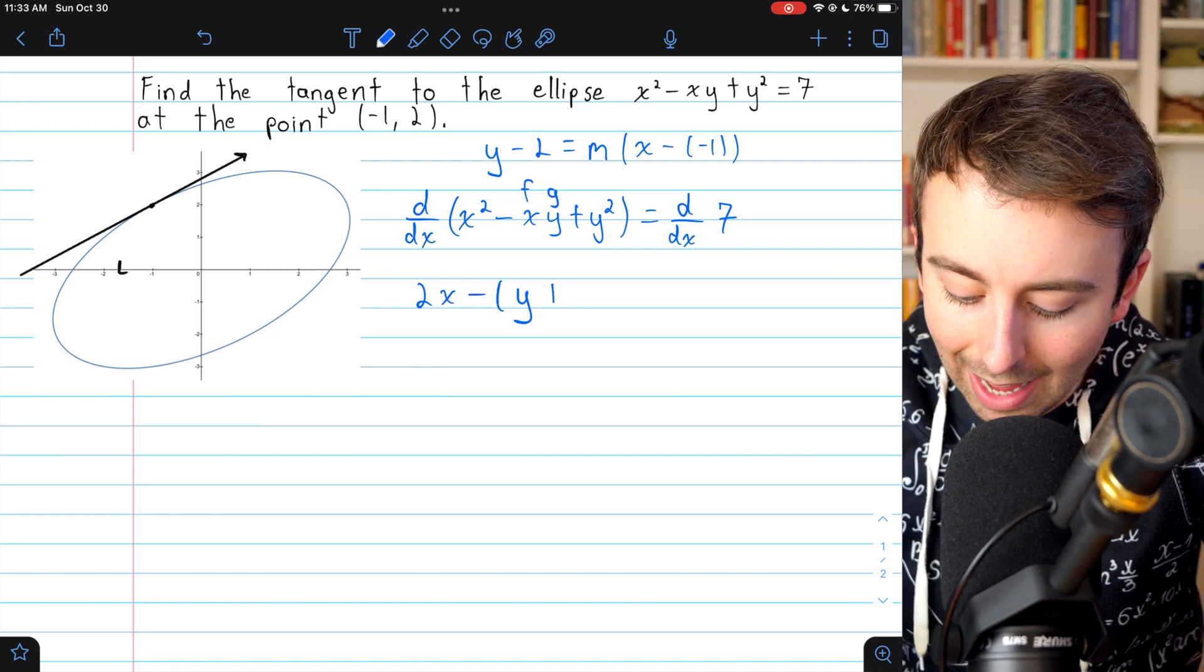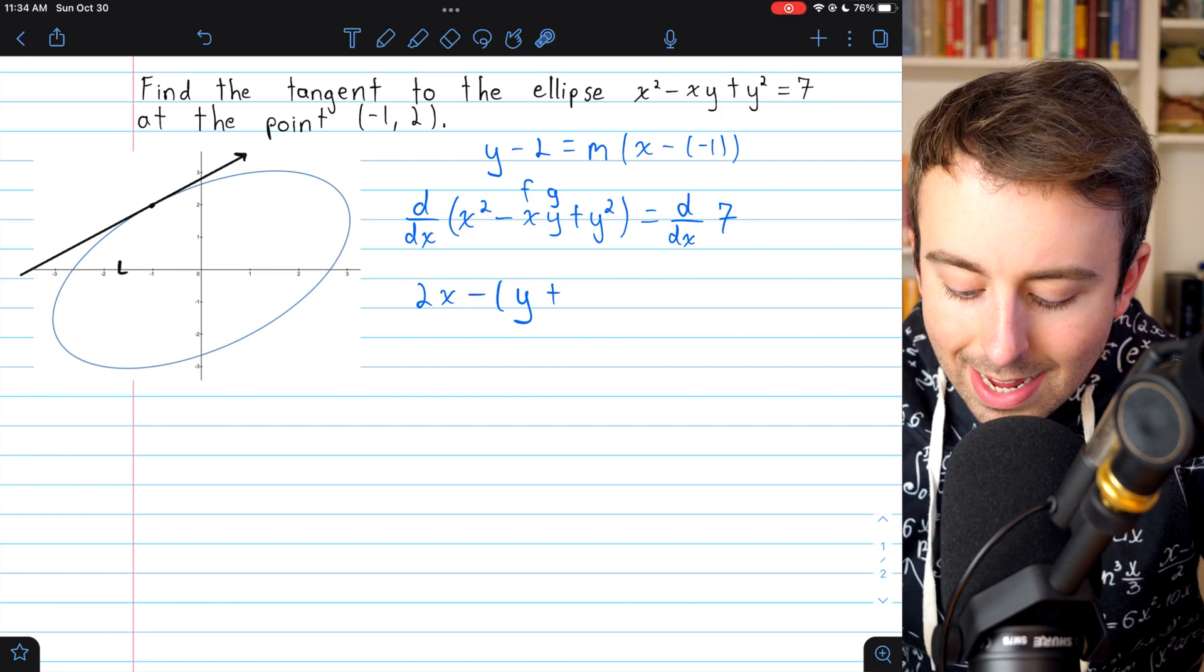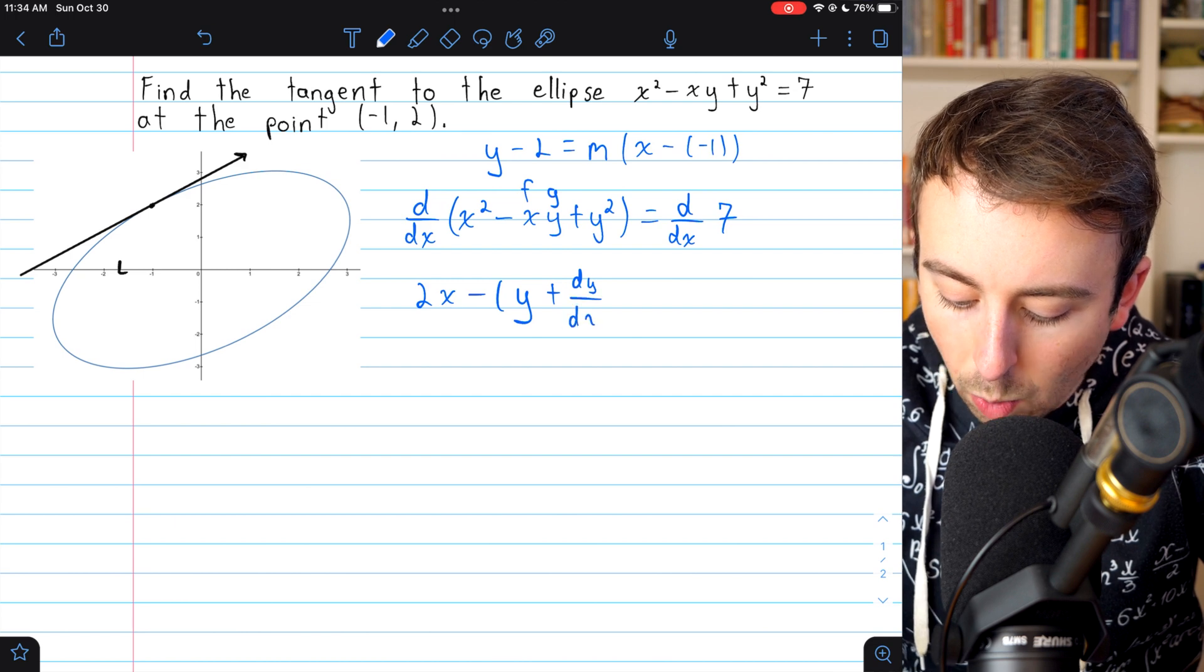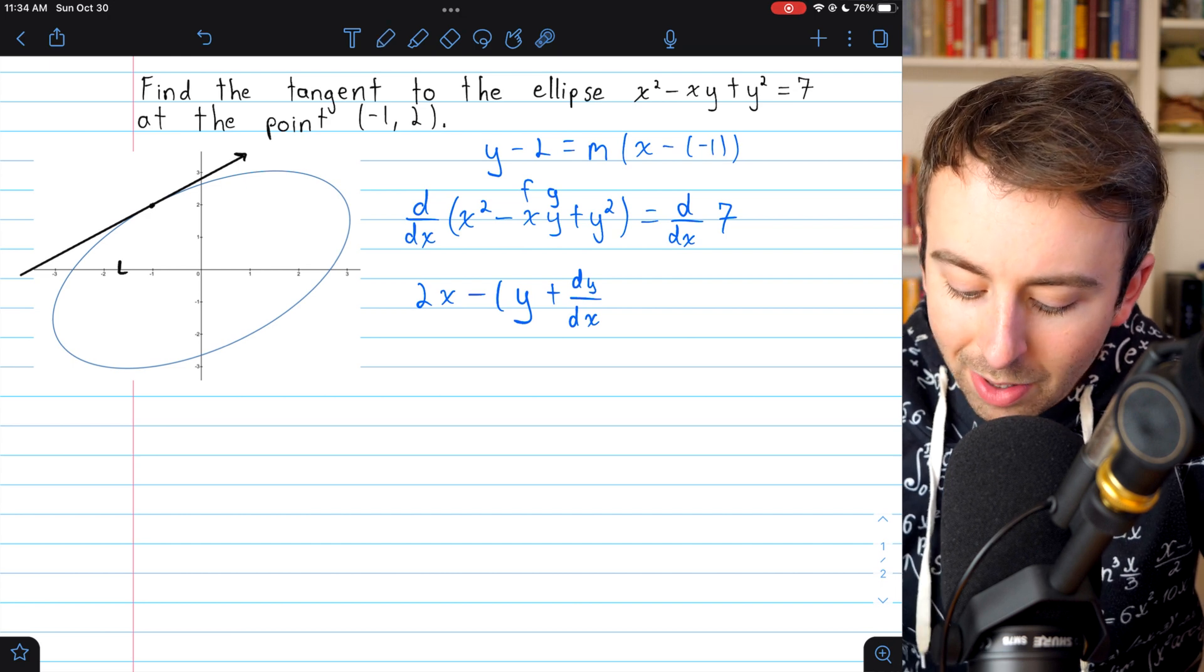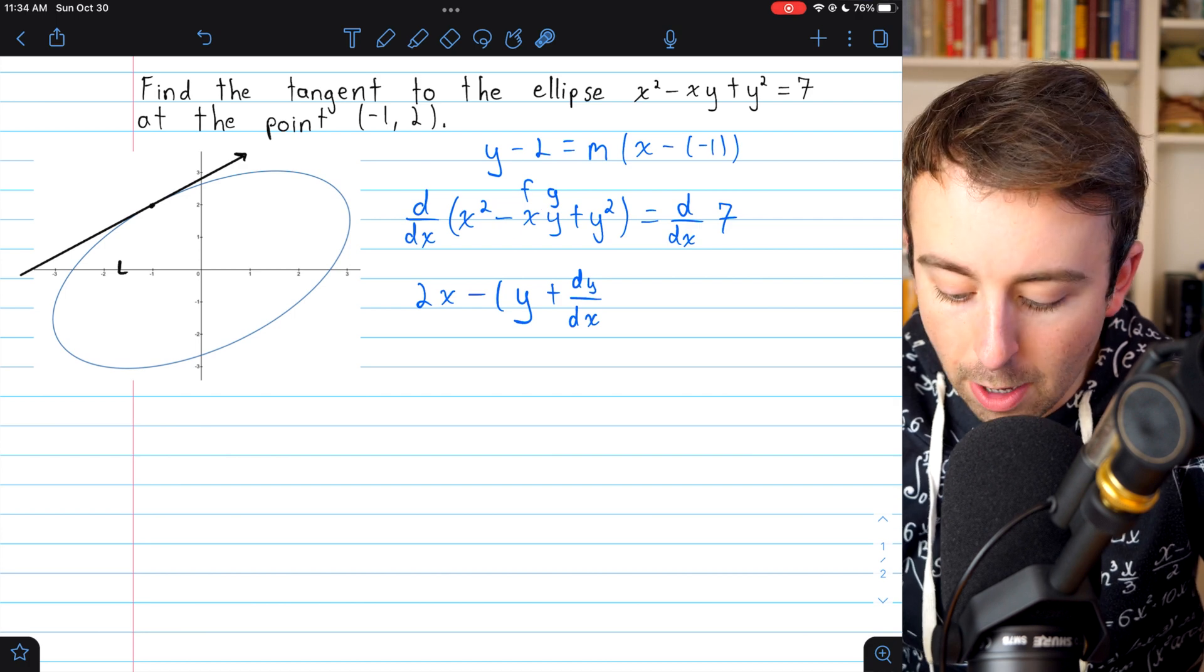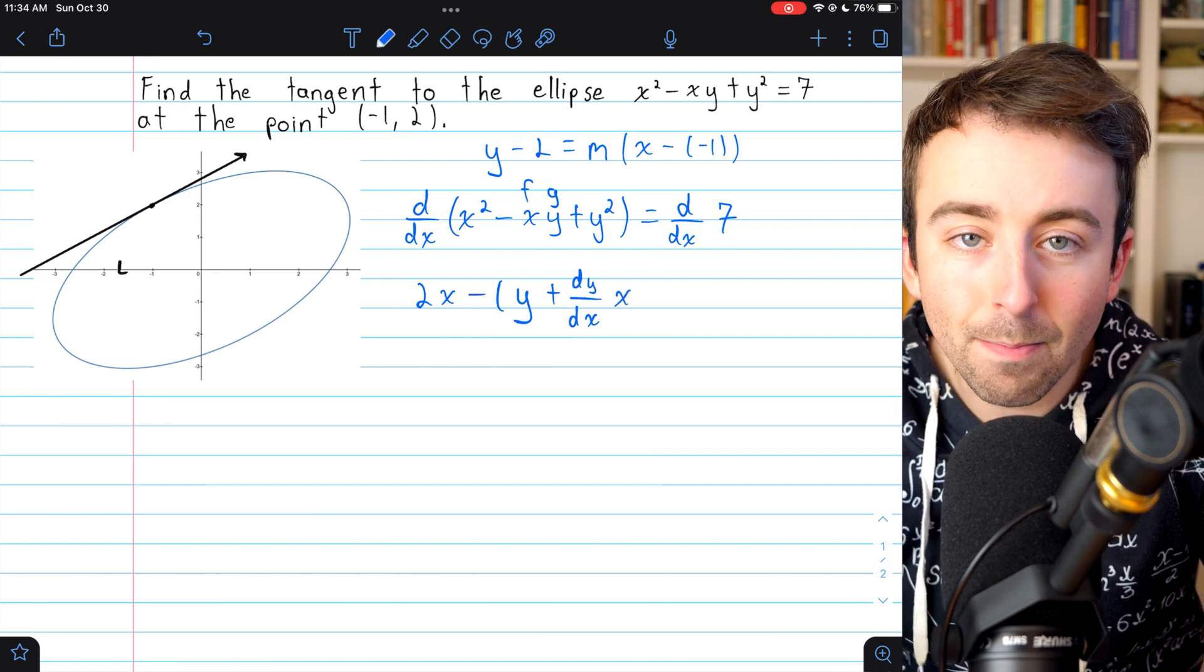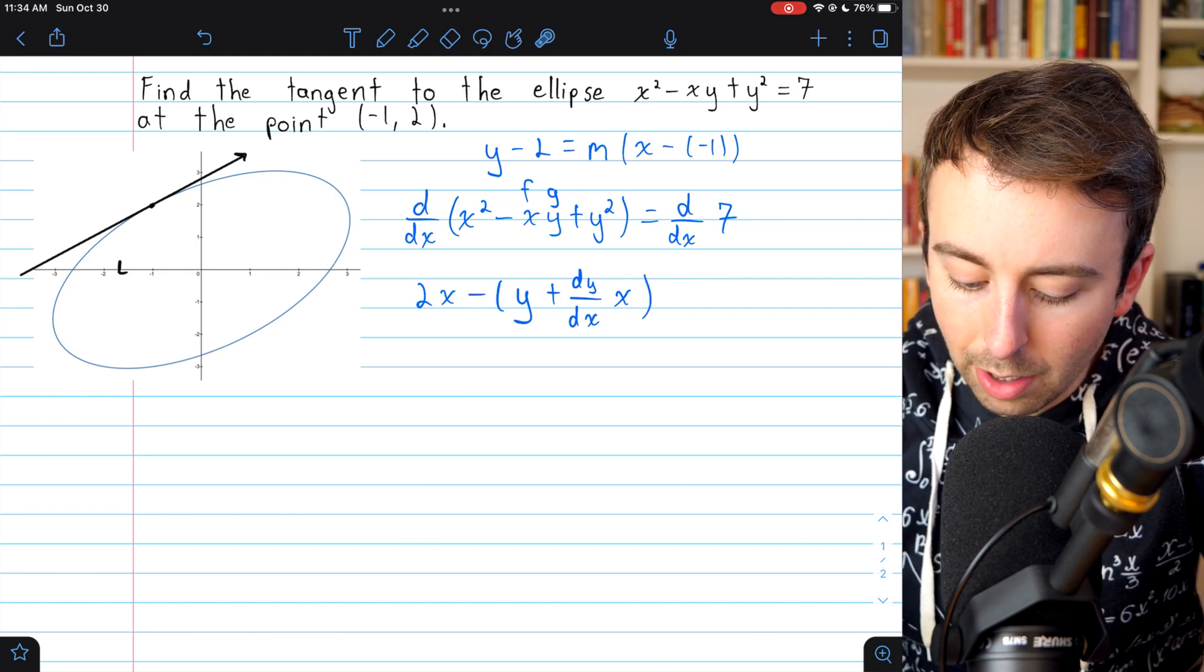Then we need to add, again we're still in the product rule, we need to add g'f. g is y, so g' is the derivative of y. We're differentiating with respect to x, so that's just dy/dx. Remember, when you're doing implicit differentiation, you're always going to get a dy/dx when you take the derivative of a y term. Here it is in this example. So we've got g', that's dy/dx, times f, so then we have to multiply by x. Then we can close these parentheses. That's the derivative of xy.